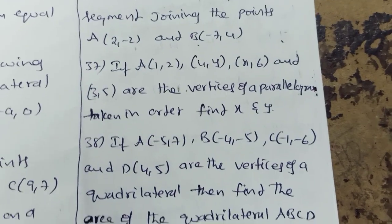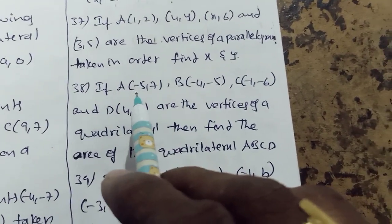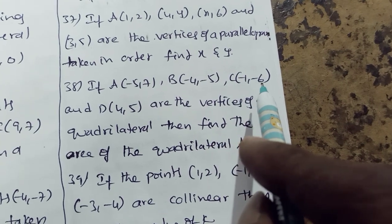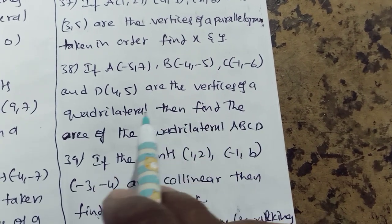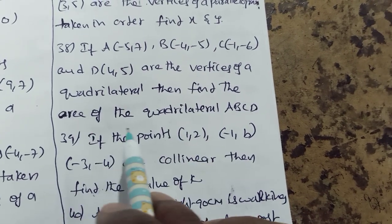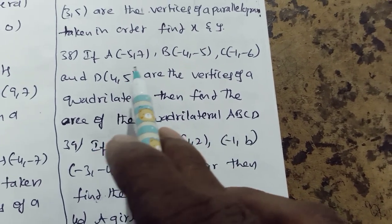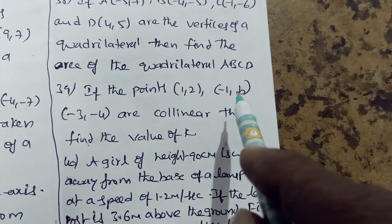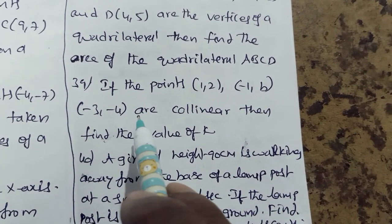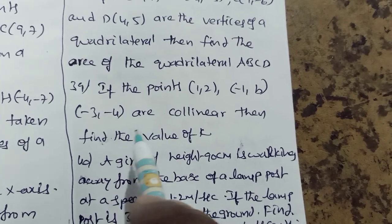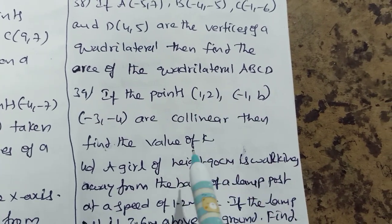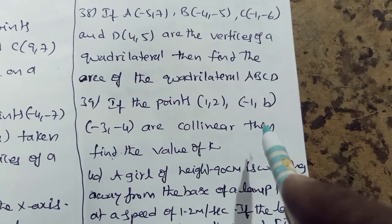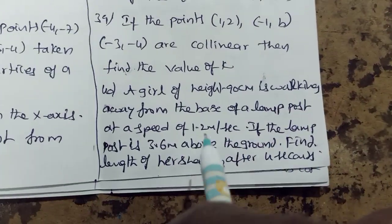If a 5 minus 5 7, b minus 4 minus 5, c minus 1 minus 6, and d 4 5 are the vertices of a quadrilateral, then find the area of the quadrilateral. If the points 1 2, minus 1 b, minus 3 minus 4 are collinear, then find the value of k. When points are collinear, the area of the triangle is 0, so use the formula.